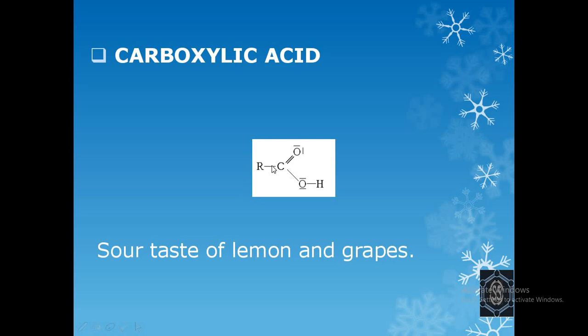R indicates the hydrocarbon group present. It can be CH3, CH3CH2, and so on. There is just the replacement of H of this hydrocarbon group with the functional group, the COOH group. The sour taste of lemon and grapes is due to this carboxylic acid.